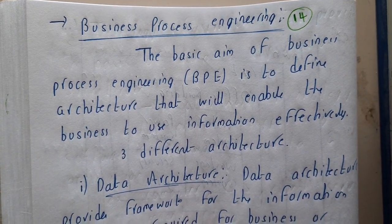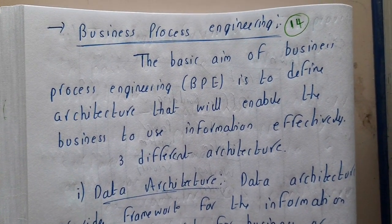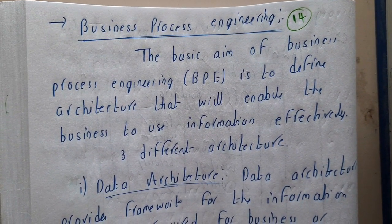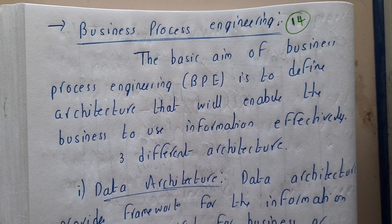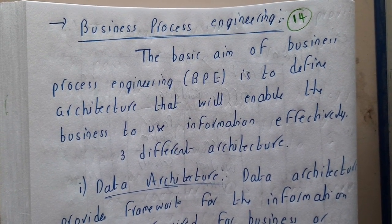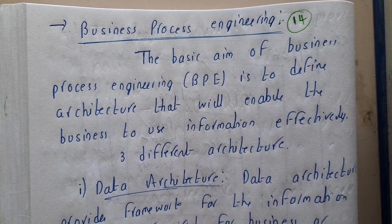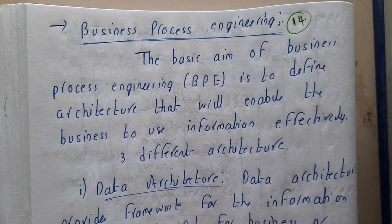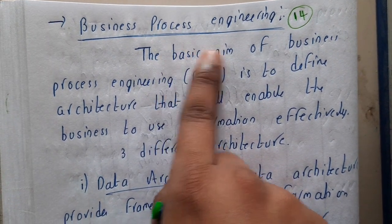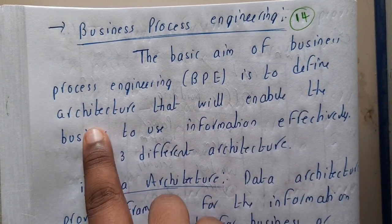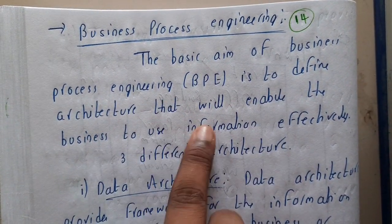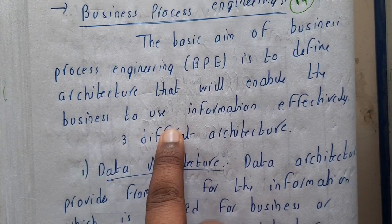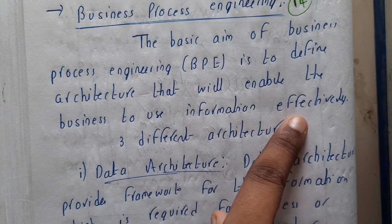Hello guys, we are back with our next lecture. In this lecture, let us go through business process engineering. Business process engineering can be done in three different methods or three different architectures. The basic goal of business process engineering is to define the architecture that will enable the business to use the information effectively.